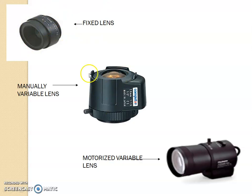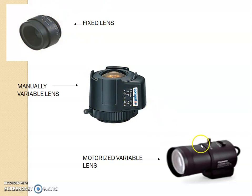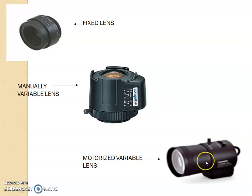With a fixed lens you cannot zoom at all. With a manual lens you can vary the zoom controls manually. With a motorized lens this can be done remotely — you do not have to go manually and adjust the lens.